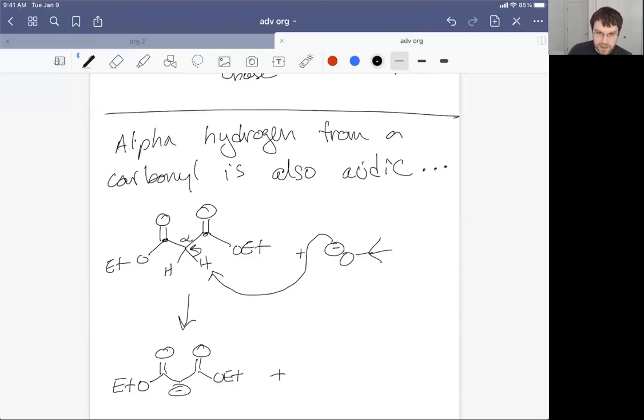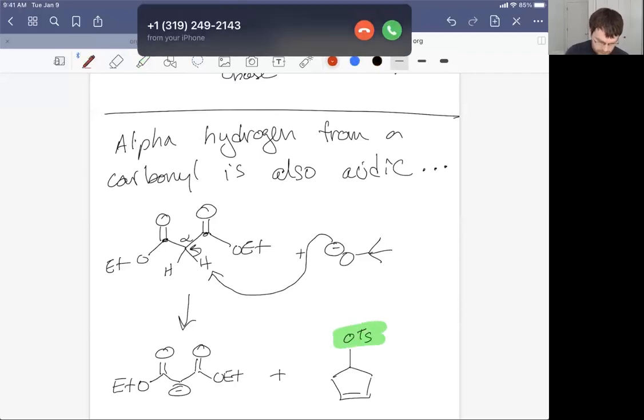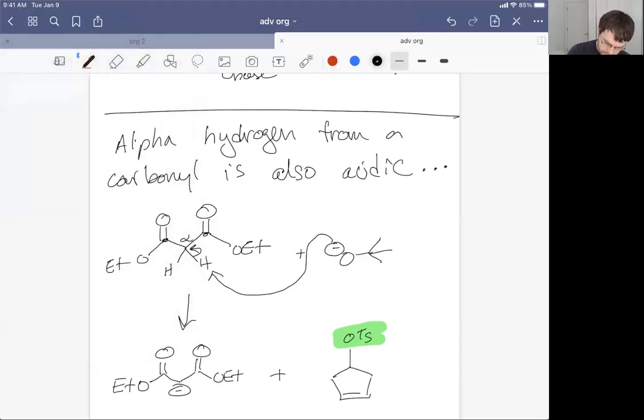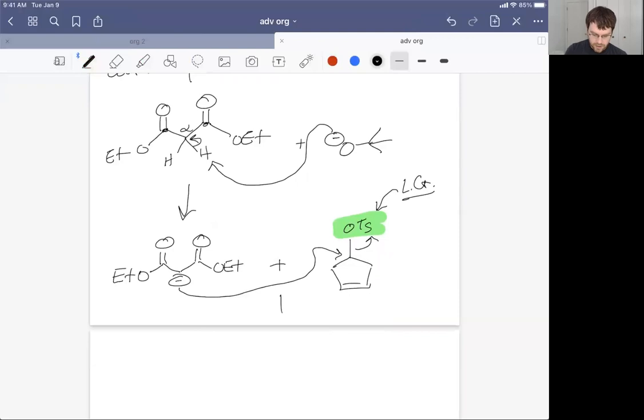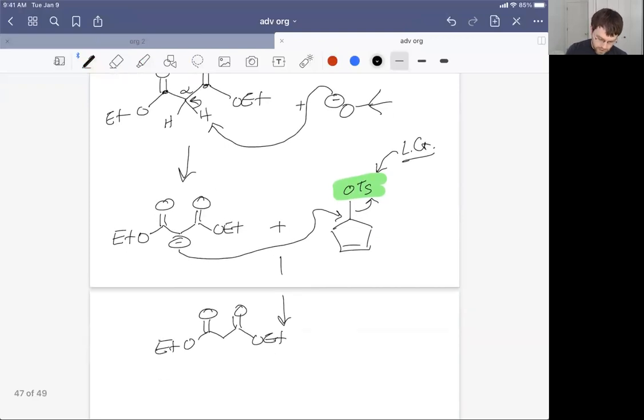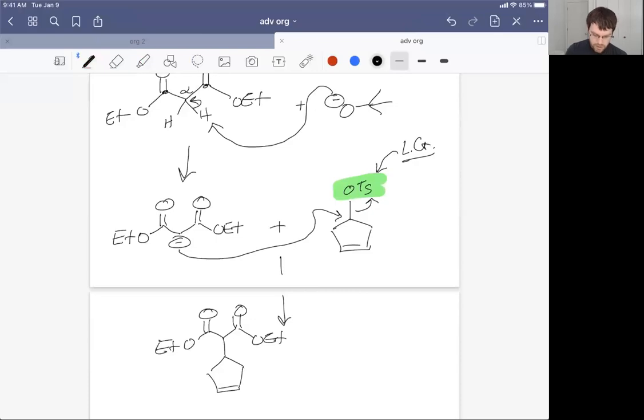So what could you do with this? You could react this with something that has a good leaving group. I believe I pulled this from the book as an example. Tosylate, OTs—we need to highlight that. Tosylate is a good leaving group. This group right here is our leaving group in an SN2-like reaction. And so the negative charge at the alpha position is going to add to the carbon bearing the good leaving group, which is OTs. And that's going to give rise to a product that establishes the formation of a new carbon-carbon bond, which I show here. So there's our new bond.